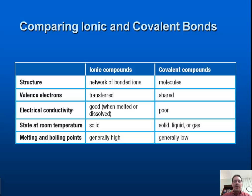Those outermost electrons are shared between the atoms. As far as electric conductivity, ionic compounds are good conductors — when melted or dissolved, such as dissolving salt in water, we get some electric conductivity. With covalent compounds, like sugar in water, we don't get any electricity produced — poor electric conductivity. At room temperature, ionic compounds tend to be solid, while covalent compounds can be solid, liquid, or gas. Melting and boiling points are generally high for ionic compounds and generally low for covalent compounds.